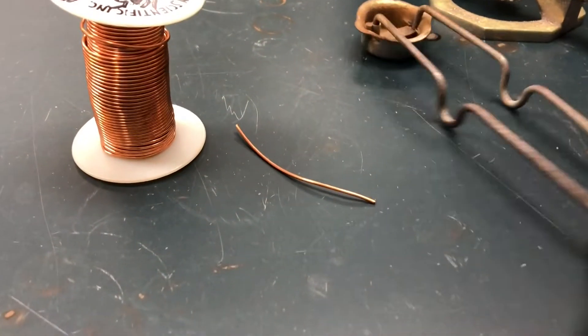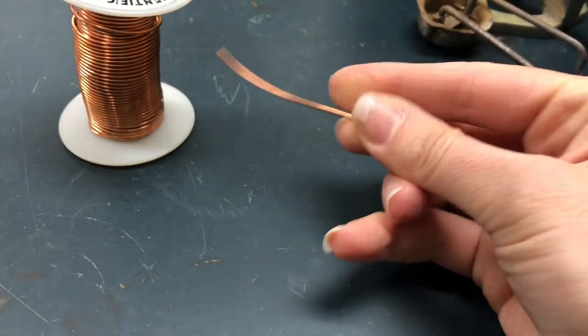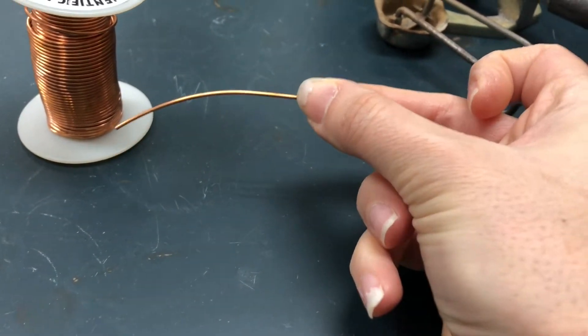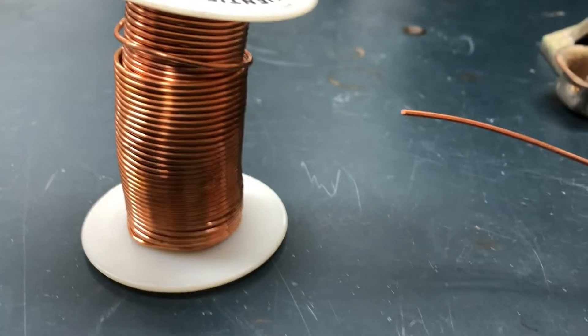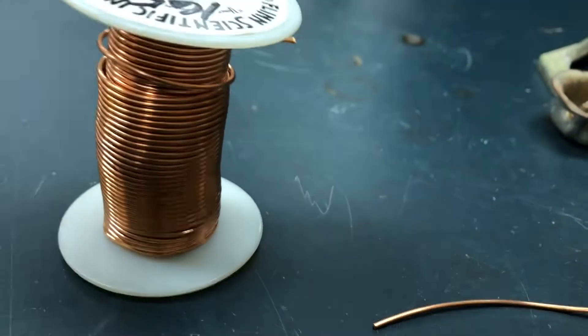We will start off with a piece of copper wire. If you notice here I've cut myself a couple inches of copper wire, so go ahead and take some observations of this pure copper wire that I got from the spool.